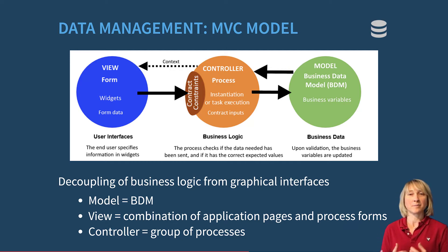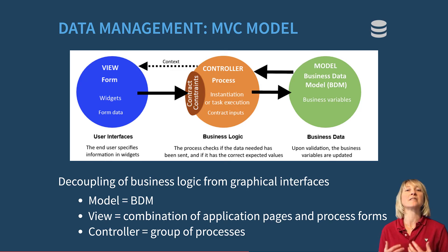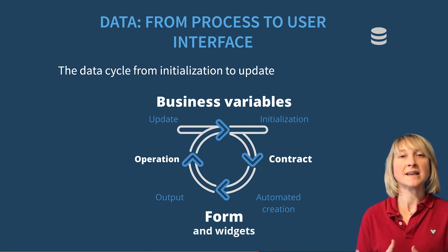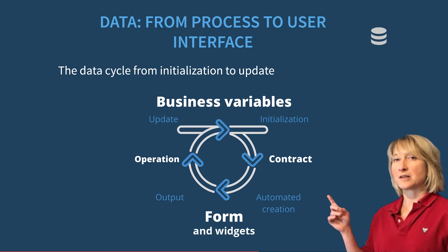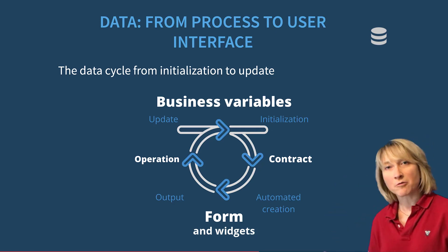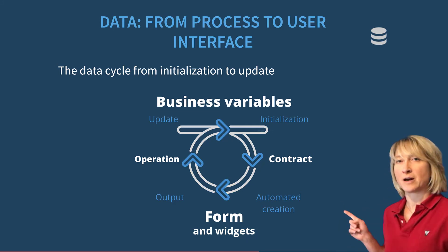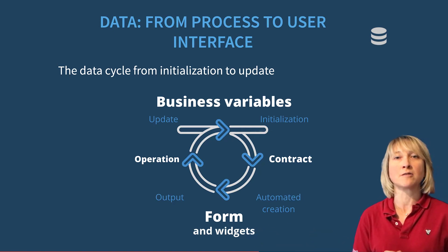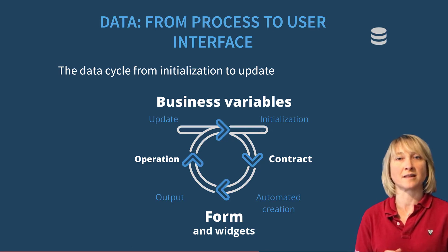The BDM and another concept called contract are key to ensuring consistency between each layer of this architecture and controlling the data cycle. Business variables are initialized from the BDM, and forms can be automatically created based on that data, but they have to be first validated by the contract. Data is sent from the process forms, and the output data is updated through the business variables in the business database and used in the process. The contract helps automate the initialization and update of forms.